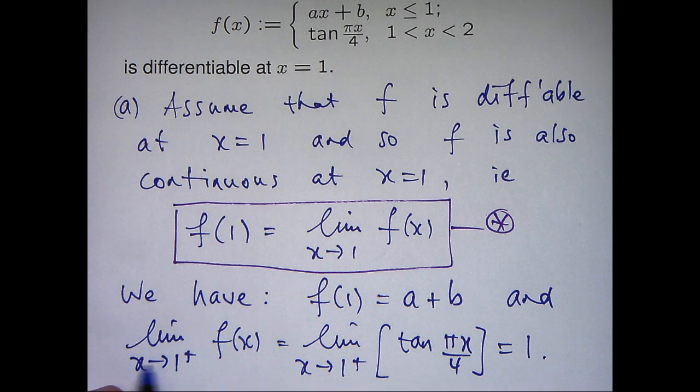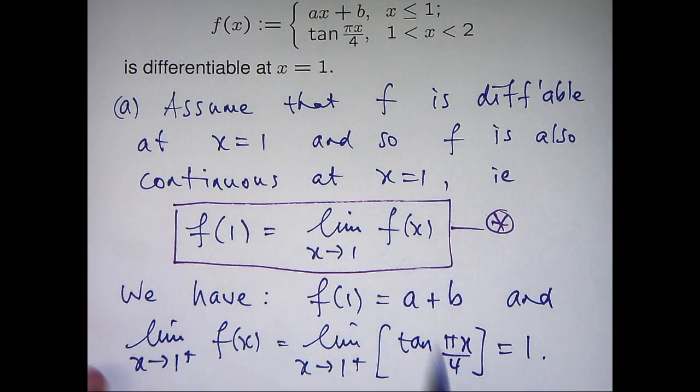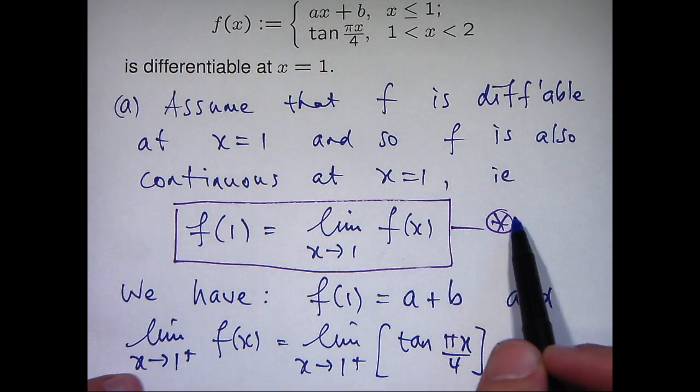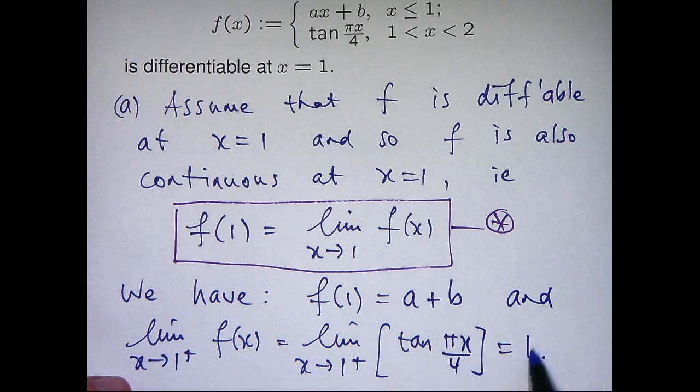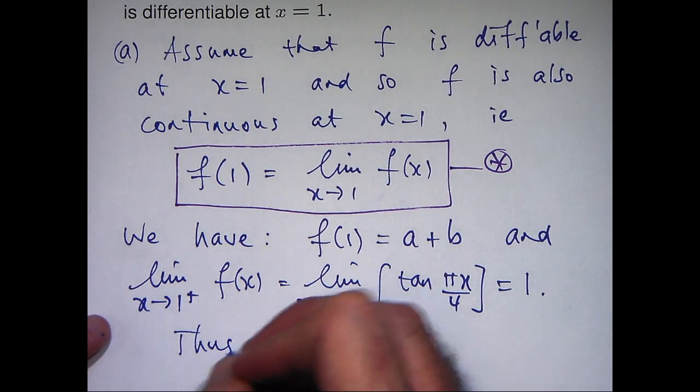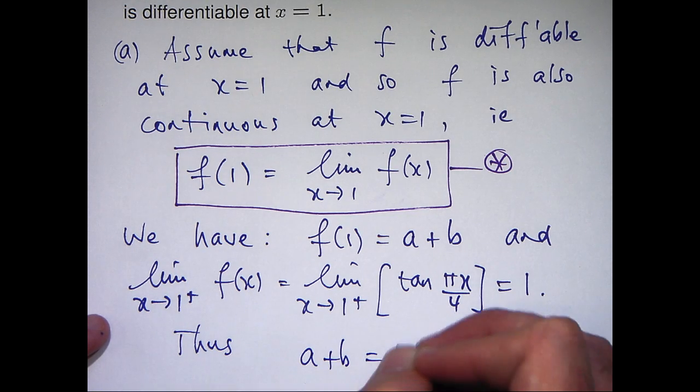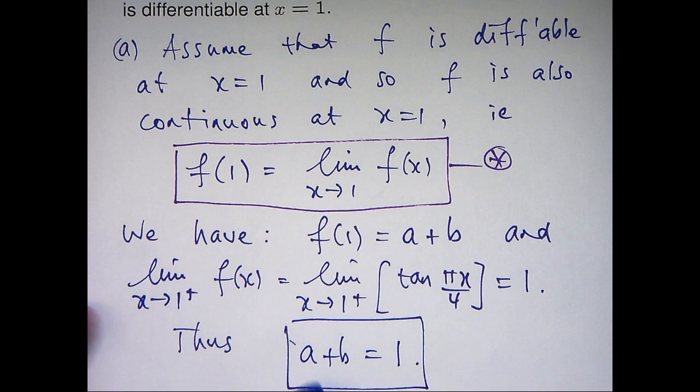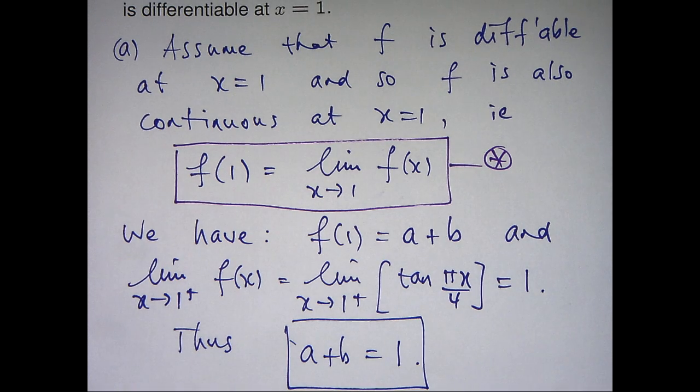If I took the limit as x approaches 1 from the left I would actually get a plus b so I'm not going to do that again. But what we can do is involve star and make these two things equal. So, we don't know what a and b are but at least we have a relationship involving them now.